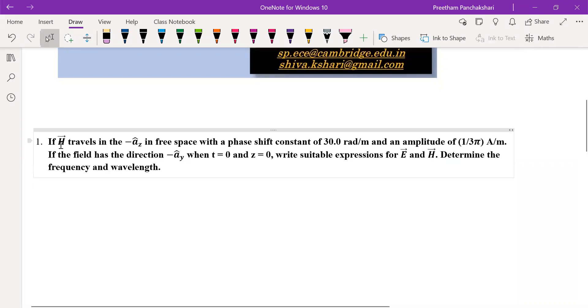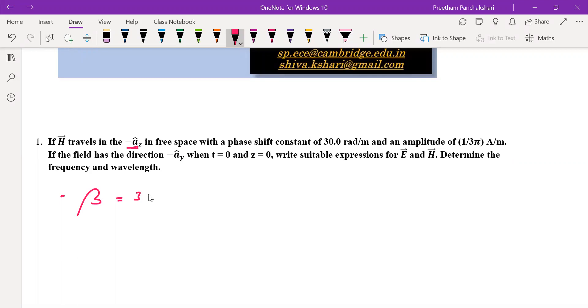A H field travels, that means magnetic field travels, that means H belongs to an electromagnetic wave. It travels in minus a cap z direction in free space with a phase shift constant, nothing but beta, that is given by 30 radians per meter.